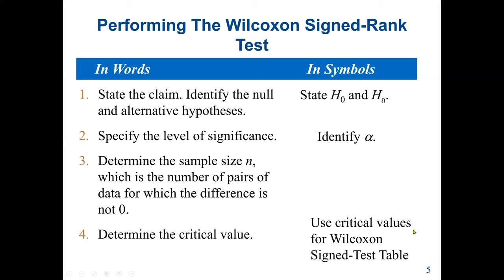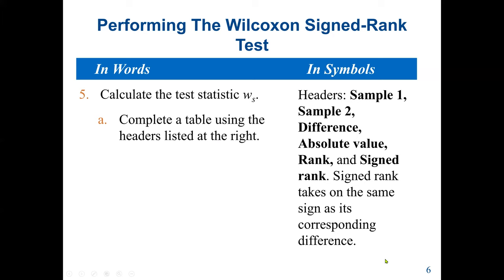After determining sample size, we determine the critical value using the critical value table for the Wilcoxon signed-rank test. We then calculate the test statistic. We complete a table with headers: sample one, sample two, the differences, the absolute value of the differences, the rank, and the sign rank. The sign rank takes on the same sign as its corresponding difference.